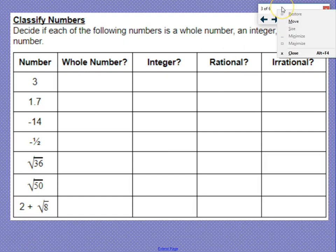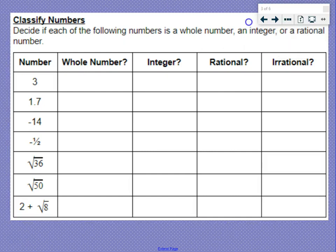Classifying numbers. Decide if each of the following is a whole number, integer, rational, or irrational number. Alright, 3. That is a whole number, yes, we'll put a check mark there. Integer, yes, it is an integer. Rational: can we write it as a fraction? Yes, we can, 3 over 1. Also remember, all integers are rational numbers. If it's rational, that means it's not going to be irrational. Either one or the other.